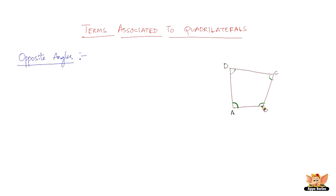Angle A and angle B are also not opposite angles because they have a common arm in AB. What can definitely be opposite angles is angle A and angle C, because they do not share a common side or a common arm — that's why they are called opposite angles. Similarly, angle B and angle D are opposite angles because they do not share a common side or a common arm.